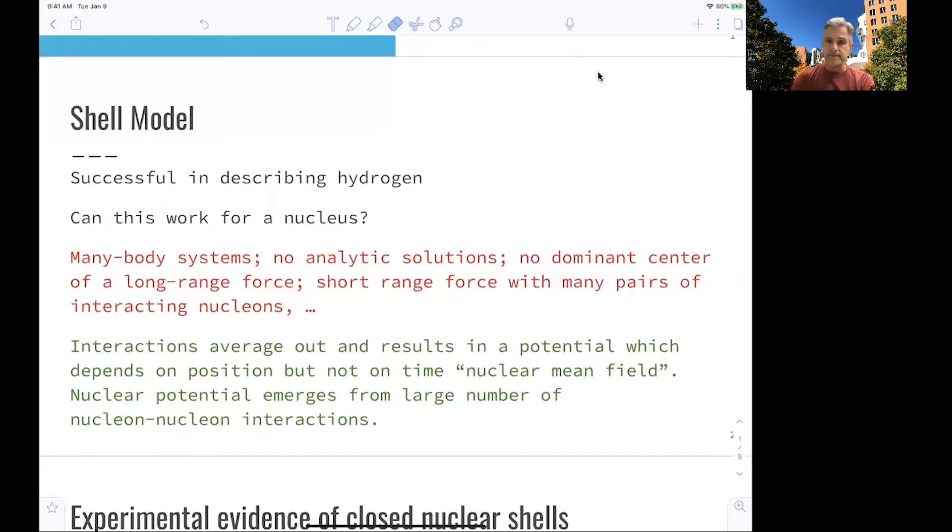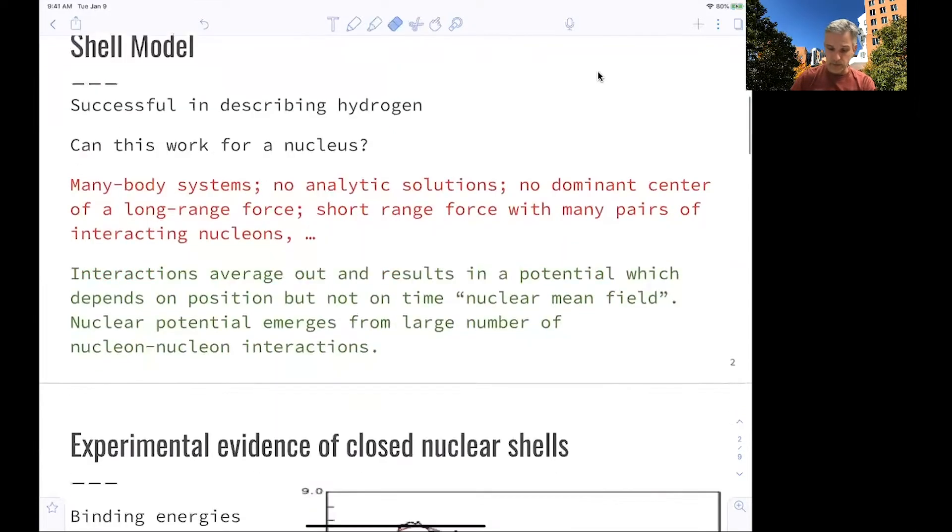On the other hand, the interactions average out and result in a potential which depends only on position but not on time. This leads us to what we call a nuclear mean field. On average, a proton and neutron inside the nucleus sees a specific potential. We can parametrize this potential with a harmonic oscillator and use that model to describe our nucleus. This works actually surprisingly well.